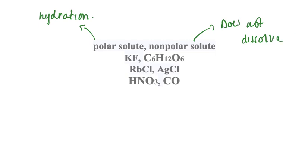Next we have KF, which is a soluble ionic compound and can ionize completely to give K+ and F-.